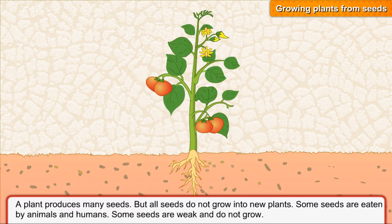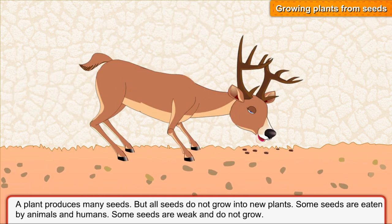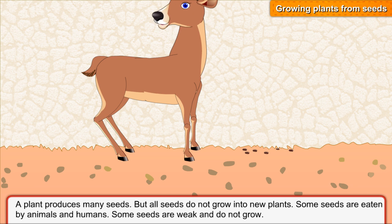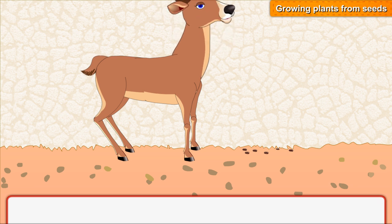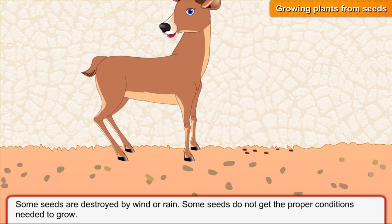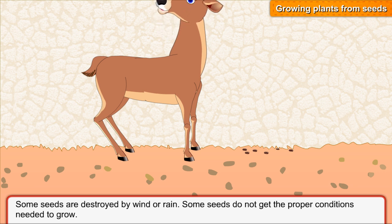A plant produces many seeds, but all seeds do not grow into new plants. Some seeds are eaten by animals and humans. Some seeds are weak and do not grow. Some seeds are destroyed by wind or rain. Some seeds do not get the proper conditions needed to grow.